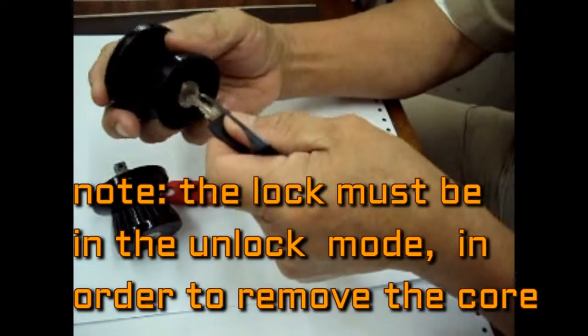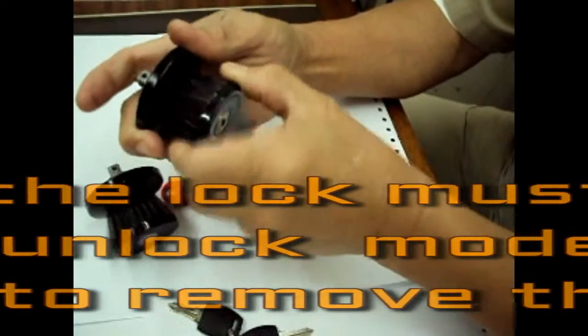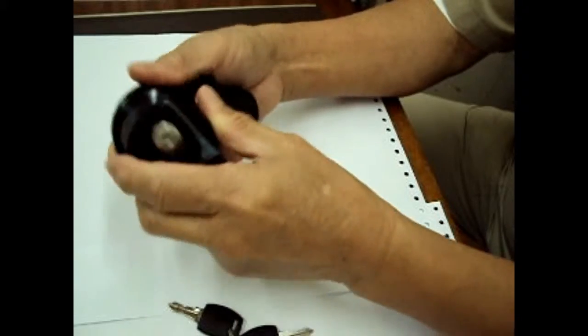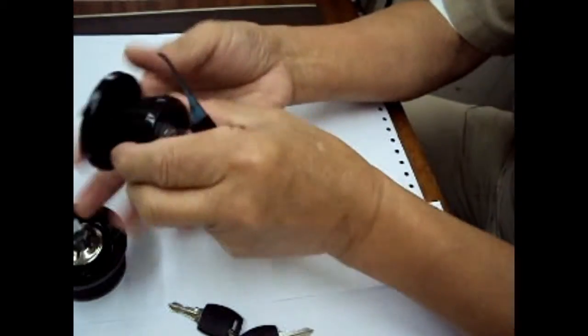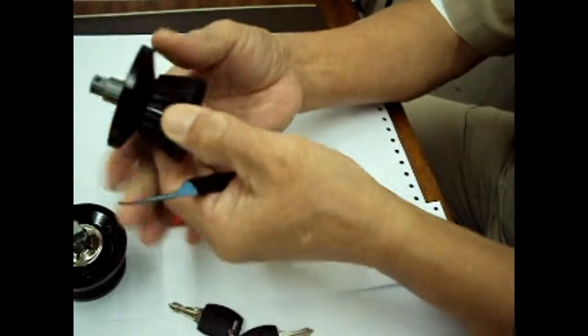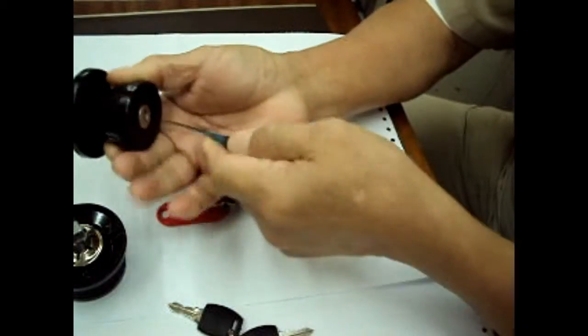But remember, the lock should be in the unlock position, alright? When it is locked, you cannot rip it out. So what you have to do is pick the lock open first, then you can remove this core.